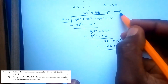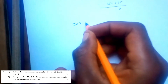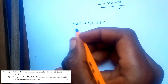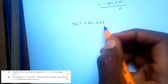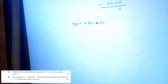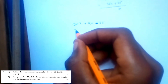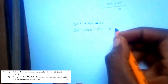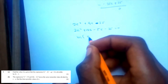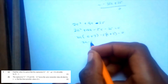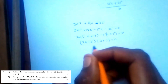Now we solve 2a squared plus 9a minus 35 equals 0. We need factors that multiply to give negative 70 and add to give 9, which are 14 and negative 5. So: 2a squared plus 14a minus 5a minus 35 equals 0, factoring as 2a(a plus 7) minus 5(a plus 7) equals 0, giving (2a minus 5)(a plus 7) equals 0.